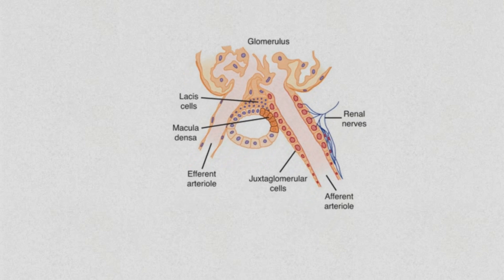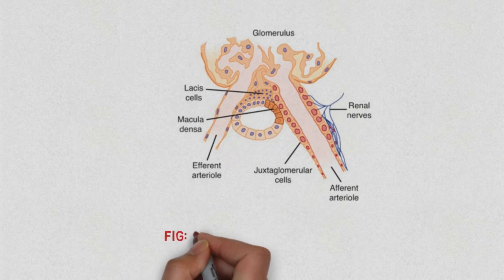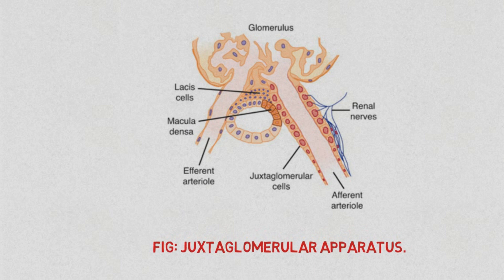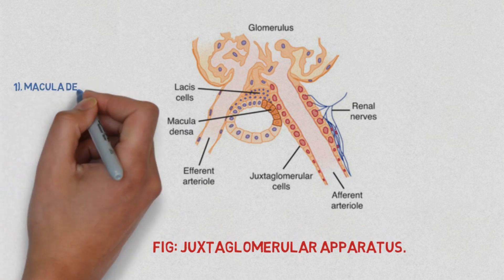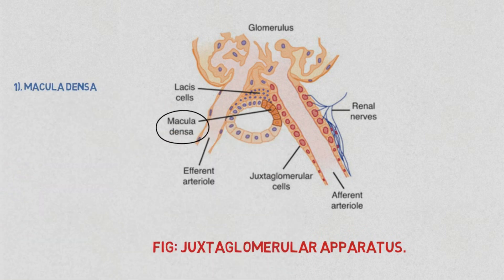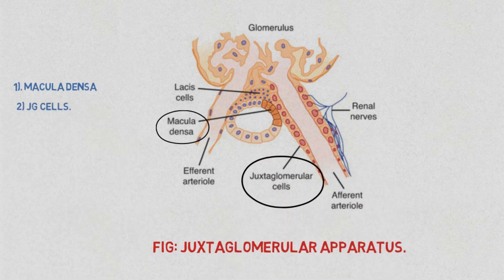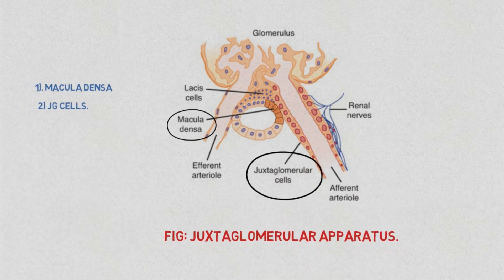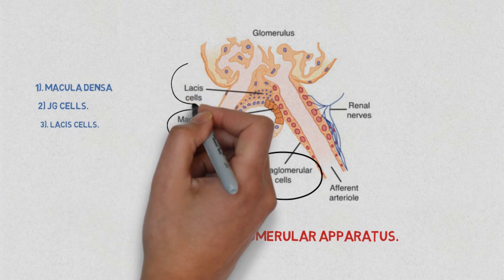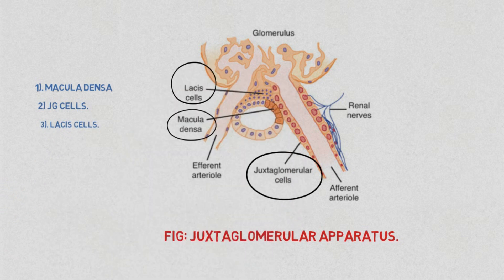Here is a figure showing all three types. The circled part denotes the macula densa, juxtaglomerular cells, and lacis cells.